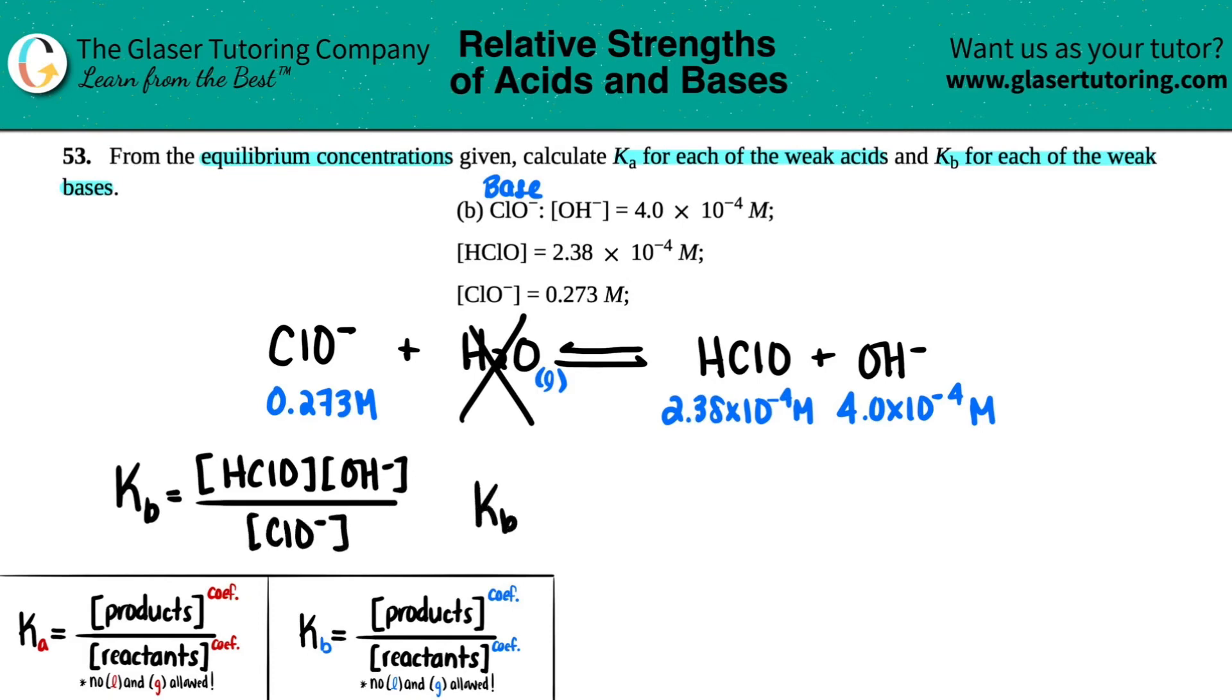Let's plug in those values. Kb equals, let's see. So HClO would be 2.38 times 10 to the negative fourth. OH- would be 4.0 times 10 to the negative fourth. And then the ClO- would be 0.273. And from there, we can find our Kb.